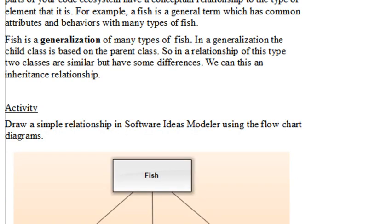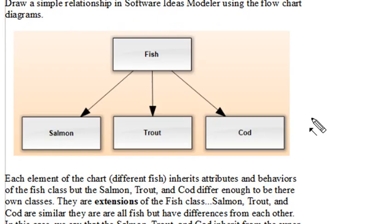As a matter of fact, when you think of generalization, you should think of inheritance. So here's an example of a generalization of fish from the fish cod, trout, and salmon. And we're going to build this in Software Ideas Modeler. We're actually going to use the flowchart diagram tools to show you how to do this.